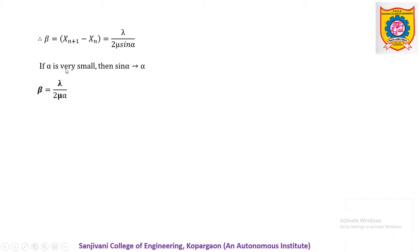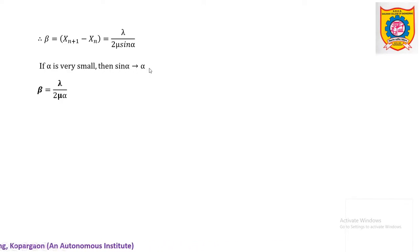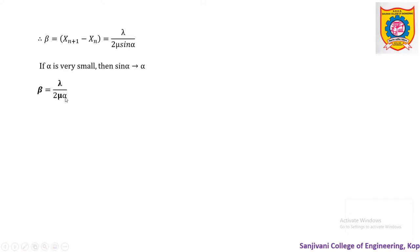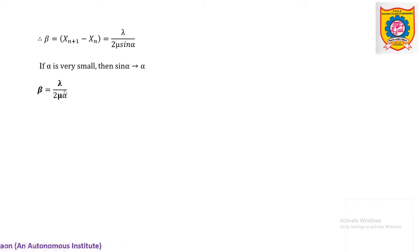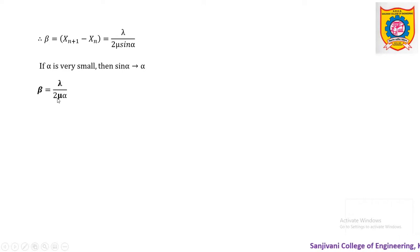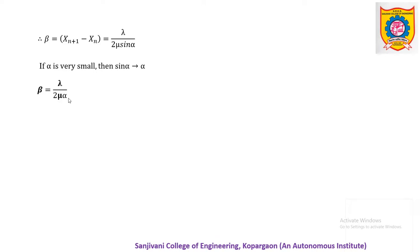For small wedge angle alpha, sin(α) tends to α, so this equation gets modified to beta = λ / (2μα). If the medium is air, μ = 1, so beta = λ / (2α). For any medium with refractive index μ, the desired expression for fringe width is beta = λ / (2μα).